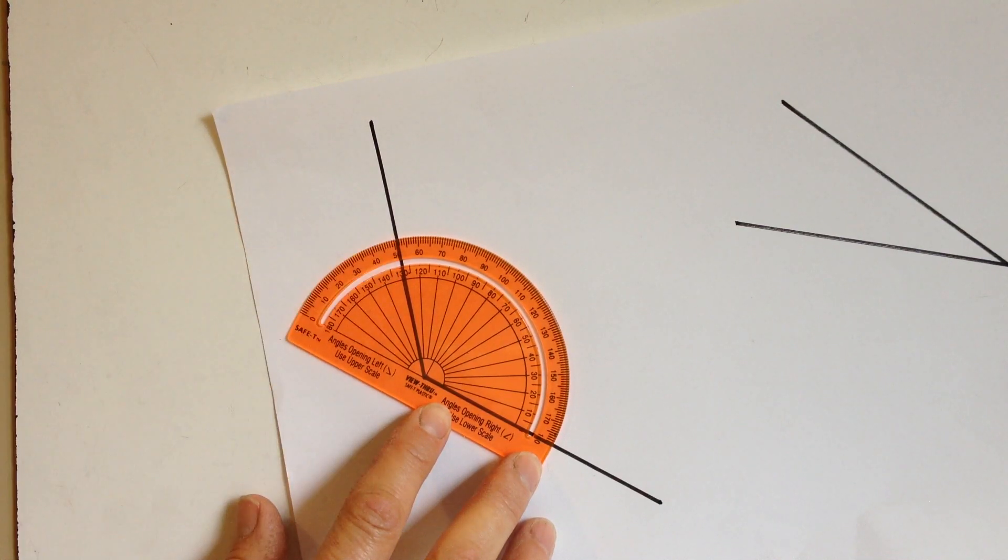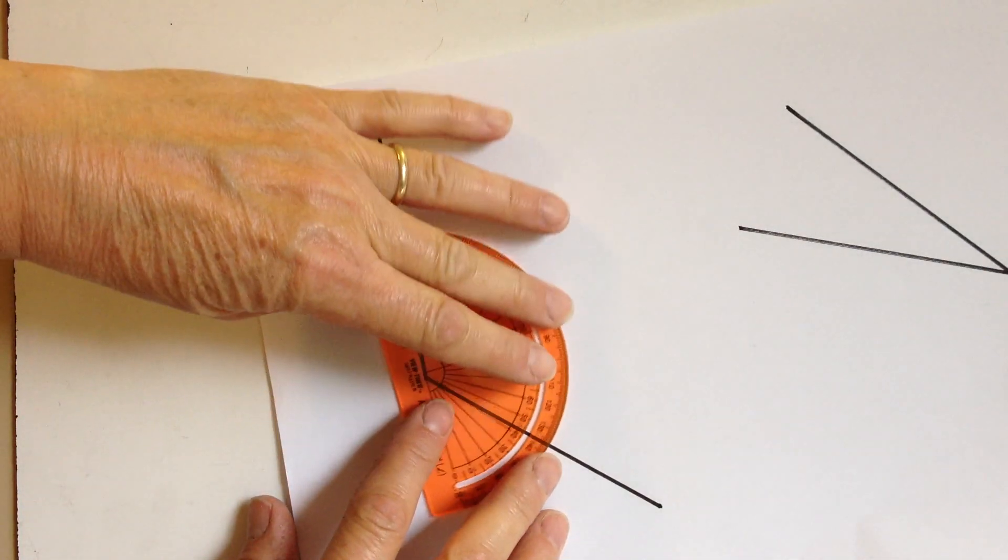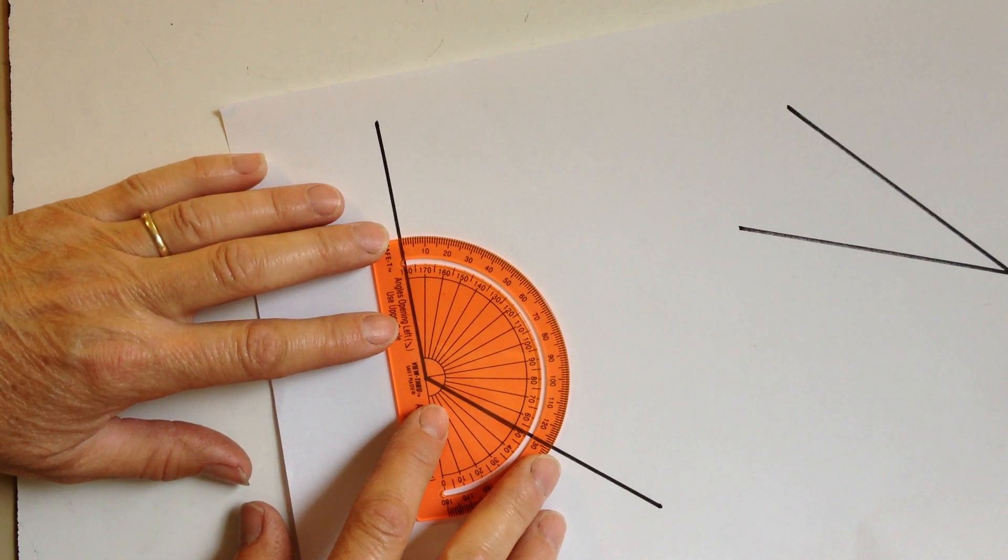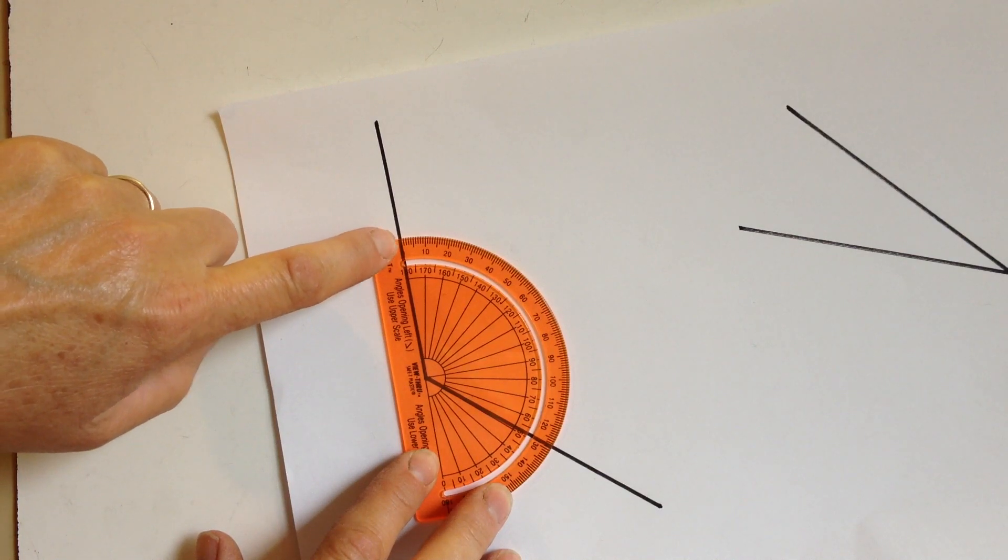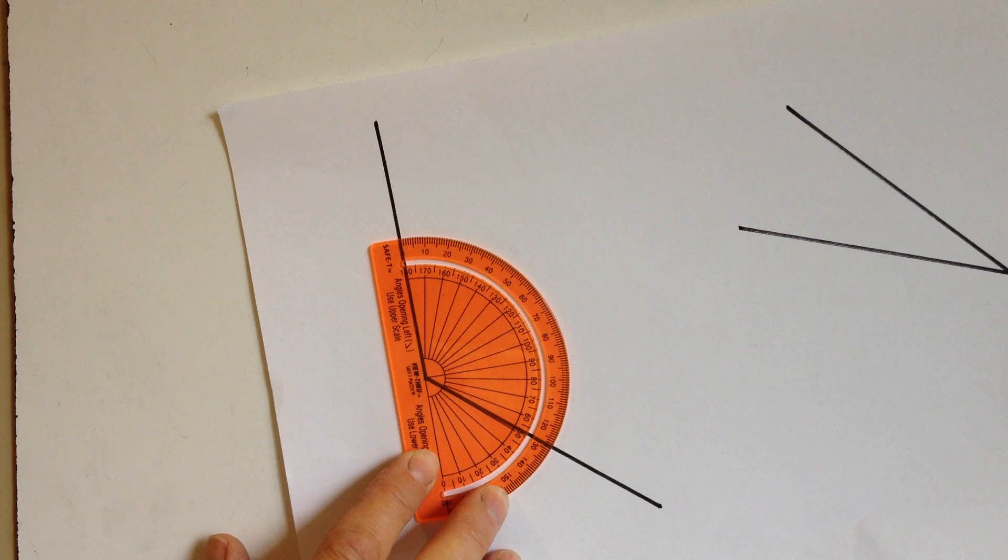I'm looking up there. It's like 1 or 1.5 degrees short of 130 degrees, so roughly 128 degrees. Then I start at zero over here and count all the way out to 128 degrees.